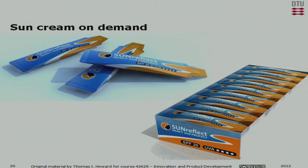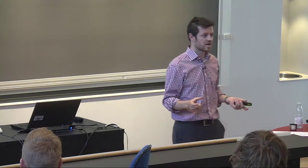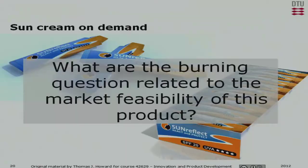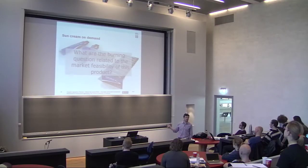So a quick exercise now. Hopefully you were here for the lecture where we did a small exercise on producing a method for selling sun cream on demand. One of the problems with sun cream at the moment is it's sold in supermarkets and you have to think well in advance — you buy it, take it home, store it, and on the day you pack it in your bag. This was an idea to say: can we sell sachets of sun cream or sun cream dispensers at the location it's needed? The exercise for you now is: what are the burning questions related to the market feasibility of this product — these sachets or small units of sun cream sold at the point of use? In five minutes, discuss in your groups what are the main questions with regards to market feasibility of this product.